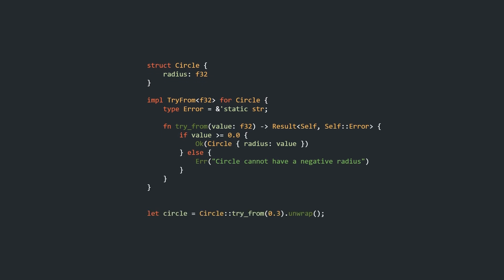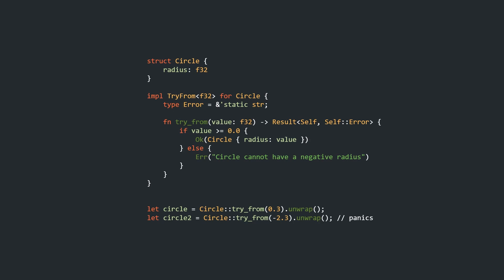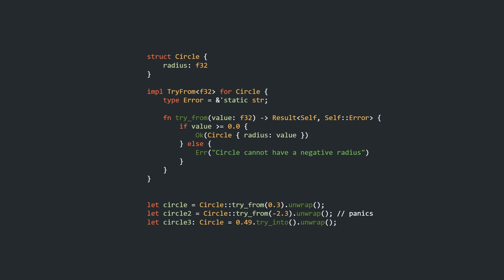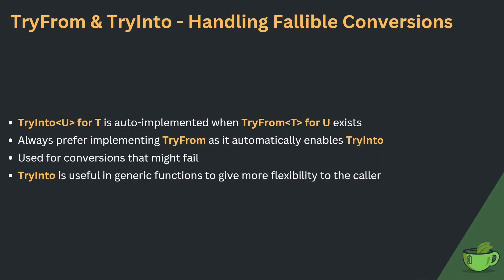In terms of usage, it is the exact same as with the From trait, but you have to deal with the Result first. And as you would expect, implementing TryFrom gives you TryInto for free. TryFrom and TryInto are very similar to From and Into — TryInto<U> for T is also auto-implemented when you implement TryFrom<T> for U. Therefore, you should always prefer implementing TryFrom, as it automatically enables TryInto. The only difference is that TryFrom and TryInto are used for conversions that might fail. And TryInto, just like Into, is very useful in generic functions to give more flexibility to the caller.